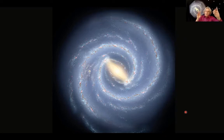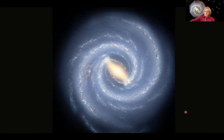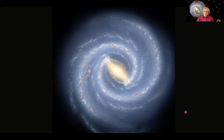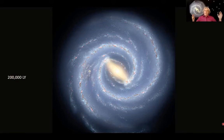The distance across our quarter solar system is about eight light hours. Get that picture in your head. But our galaxy is 200,000 light years across. So: eight light hours for the solar system, but 200,000 light years for the galaxy.